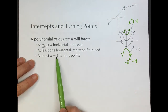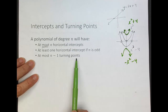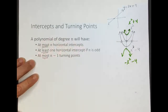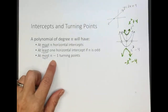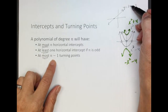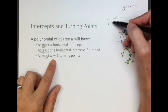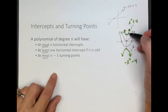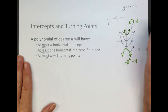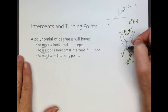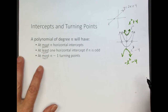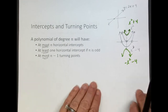There are at most n minus 1 turning points. For a linear function, degree minus 1 is 0 — zero turning points. For a quadratic, 2 minus 1 is 1 — and indeed every quadratic has exactly one turning point, the vertex of the parabola.